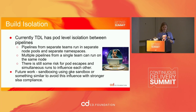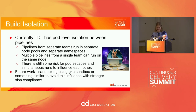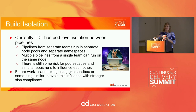We currently have pod-level isolation between our pipelines, and that's just offered by Tekton. The pipelines from separate teams now run in separate node pools and in separate namespaces. But multiple pipelines from a single team can still run on the same node, so there's some risk for pod escapes and simultaneous runs influencing each other. There's some investigative work we need to do around sandboxing using something like GKE Sandbox or other options to avoid concurrent task runs influencing one another.